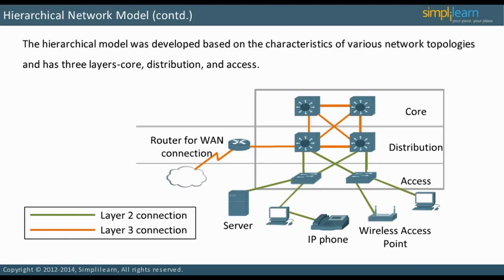The rest of the connections are layer 3. In the image, the router connects to a remote network — this is a layer 3 connection. Distribution and core layers are linked through layer 3 connections. The switches in both these layers are multi-layer switches, or MLSs, which can do layer 3 routing and layer 2 forwarding.